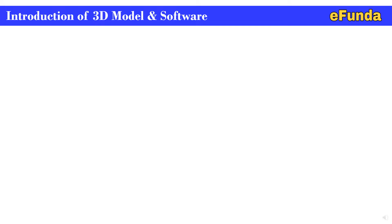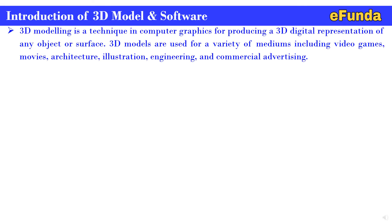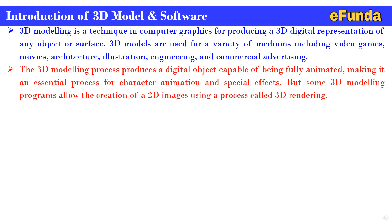Introduction of 3D Model and Software. 3D Modeling is a technique in computer graphics for producing a 3D digital representation of any object or surface. 3D Models are used for a variety of mediums including video games, movies, architecture, illustration, engineering, and commercial advertising. The 3D modeling process produces a digital object capable of being fully animated, making it an essential process for character animation and special effects.